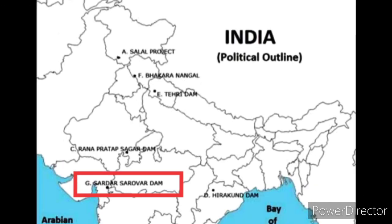Next is Sardar Sarovar Dam. This dam is built on the Narmada river in Navagam near Kabadiya of Narmada district of Gujarat.